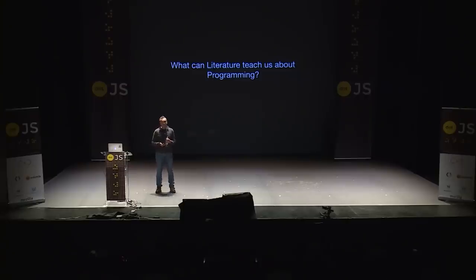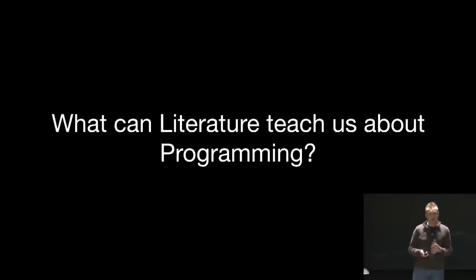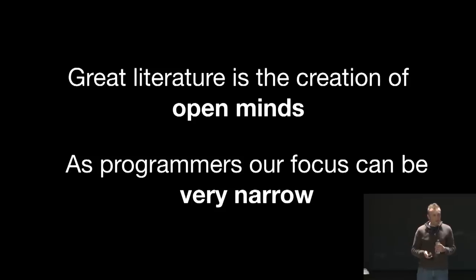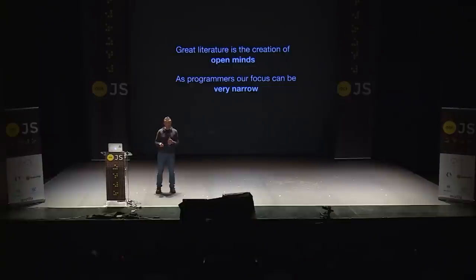So my talk is about literature and programming. What can literature teach us about programming? You're probably thinking probably not that much. They're very opposite from one another. But let's look at it this way. They're on opposite sides of the scale. Great literature is about open minds, about keeping an open mind and being observant to everything that's going on. As programmers, we're often very narrowly focused on getting from A to B, getting the one task done that we really need to get done.